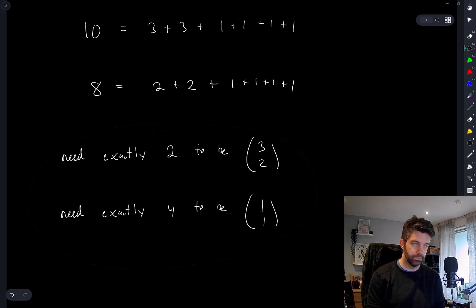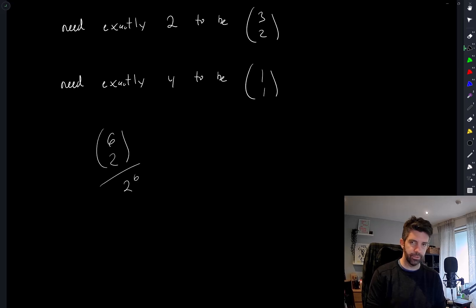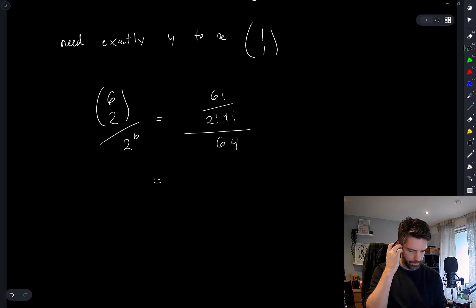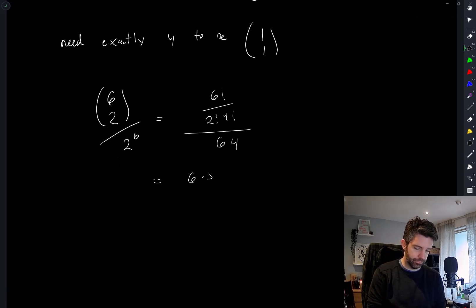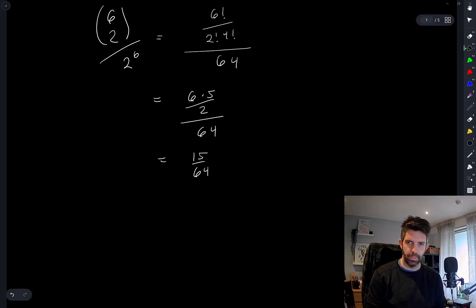The number of favorable combinations will be 6 choose 2. So the answer is 6 choose 2 out of 2^6 — that's 6 factorial divided by 2 factorial times 4 factorial, divided by 64, which gives 6 times 5 over 2 over 64, and that's 15 over 64. That's option C.